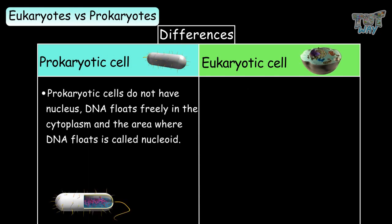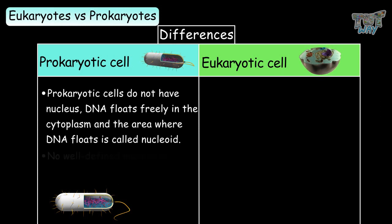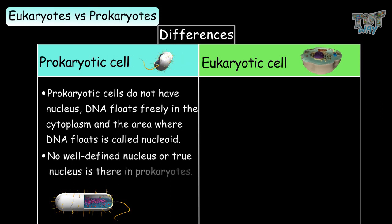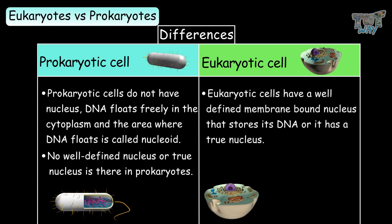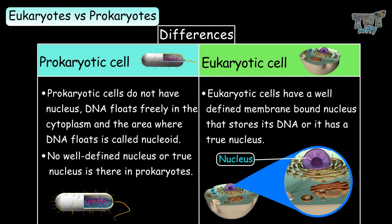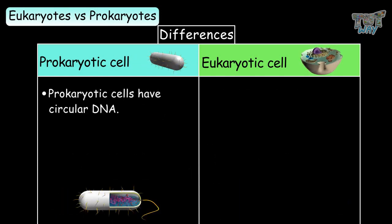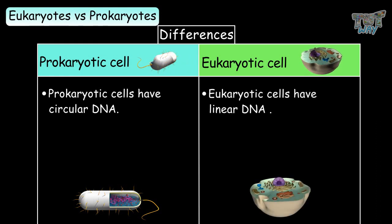Prokaryotic cells do not have a nucleus — DNA floats freely in the cytoplasm in a region called the nucleoid, with no well-defined nucleus. In eukaryotic cells, there is a well-defined membrane-bound nucleus that stores DNA, a true nucleus. Prokaryotic cells have circular DNA, whereas eukaryotic cells have linear DNA.